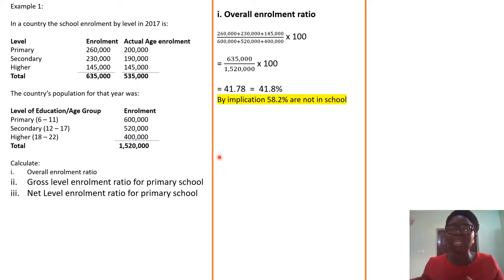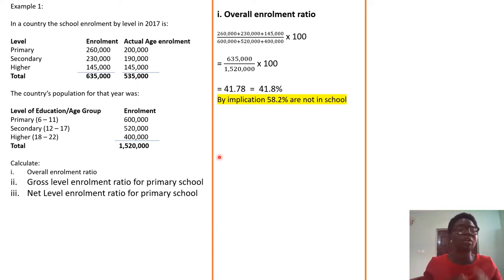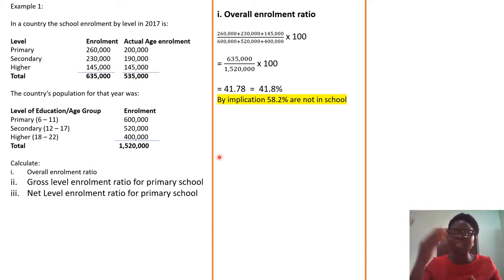This implies that only 41.8% are enrolled, meaning 58.2% are not in school, which is a serious problem for the nation. Those not enrolled will be involved in many other vices. So educational planners need to work towards how they can plan and get these people on board.